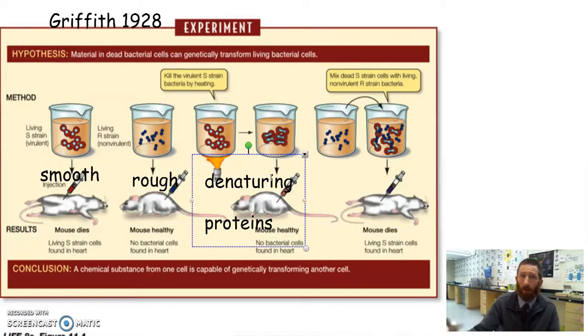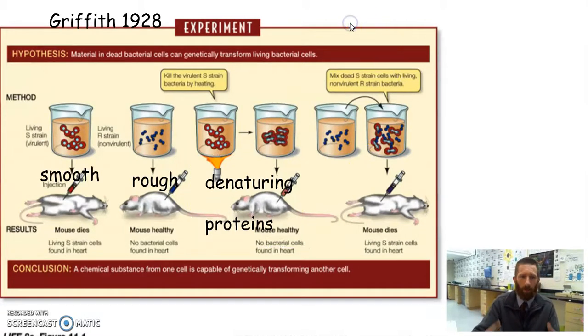That's why if you're camping or you're backpacking and you don't have a water filter, that's why you can boil the water. And then that kills all of the living microorganisms that are in the water. It doesn't take care of chemicals. It doesn't take care of like if there's lead or if there's mercury or different things like that, it's not going to take care of those, but it's going to kill everything that's living. So he boils his S strain, which normally causes the mouse to die, that kills the cells, denatures the protein. So he injects the boiled S strain into the mouse and the mouse lives. Yay mouse.